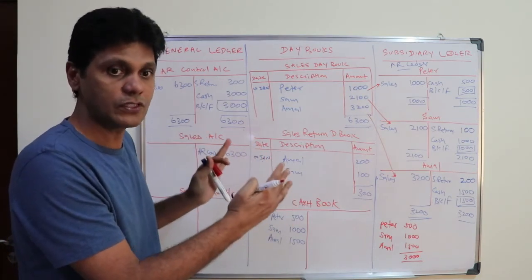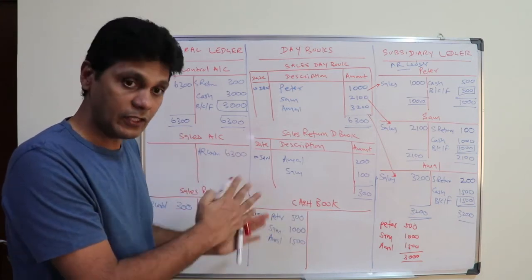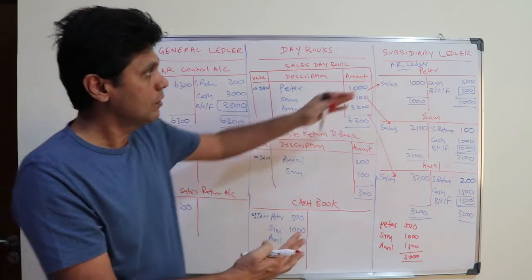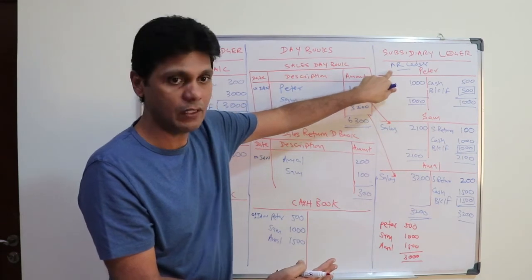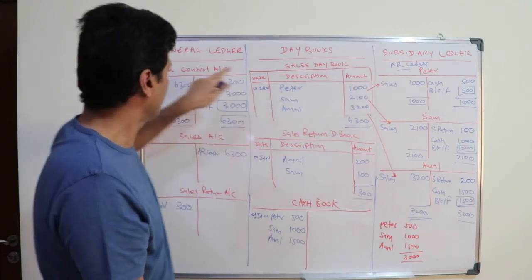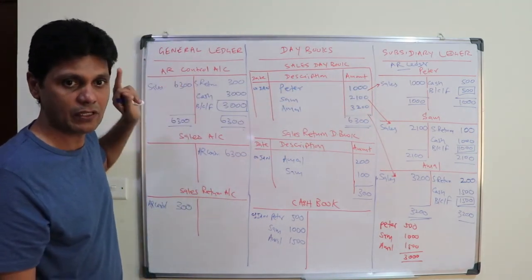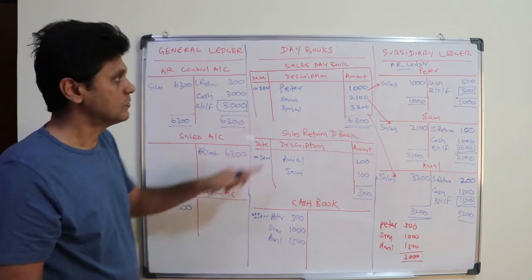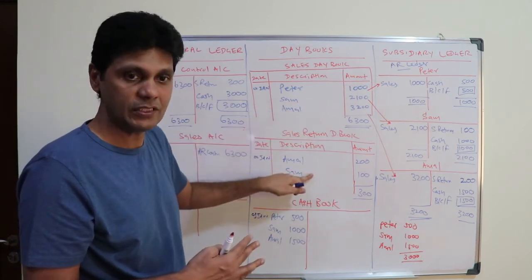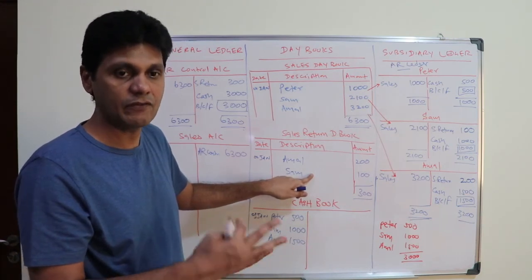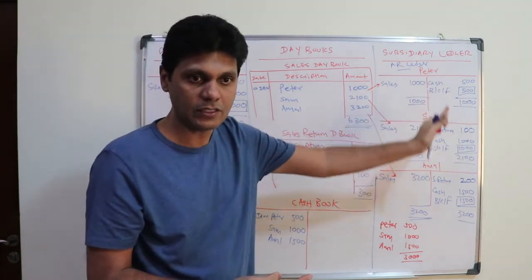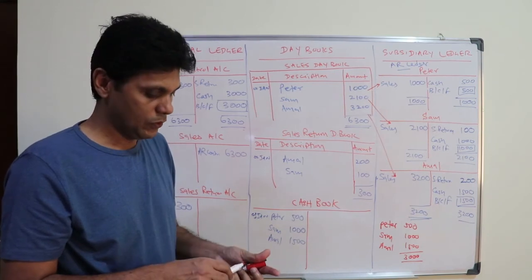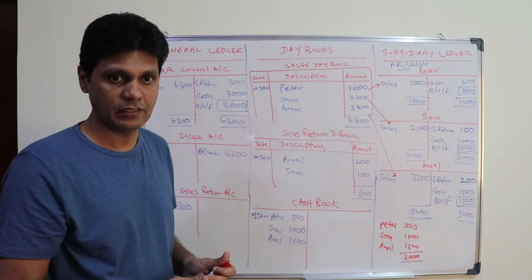The same process applies to suppliers. Supplier accounts are maintained in the accounts payable ledger. Instead of an accounts receivable control account, you use an accounts payable control account. Instead of a sales account, you have a purchases account; instead of a sales return account, a purchases return account; and instead of a sales day book, a purchases day book. The entries are reversed — you credit suppliers and debit purchases.